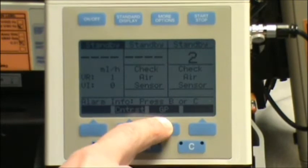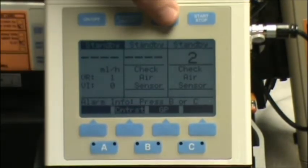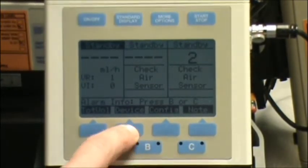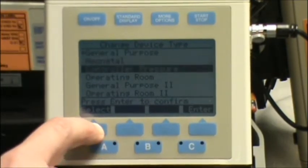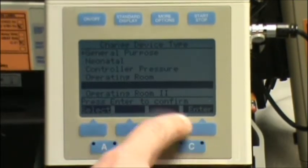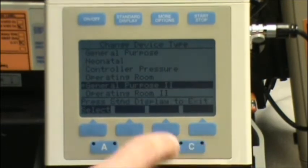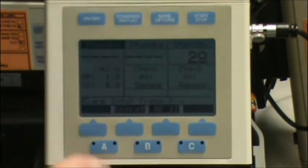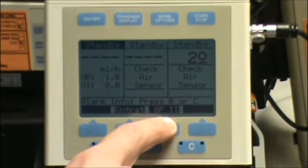I'll notice this is in GP right now. So I'll go to more options, device, select, press enter for GP2, and back to standard display and I'll notice I'm in GP2 now.